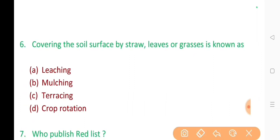6. Covering the soil surface by straw, leaves or grasses is known as? The correct answer is option B. Mulching.